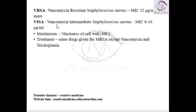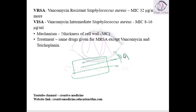For either of these, the mechanism is because of increased thickness of the cell wall. Increased thickness of the cell wall is the main issue in Vancomycin Resistant or Vancomycin Intermediate Staphylococcus Aureus.